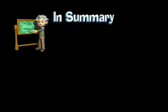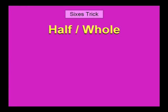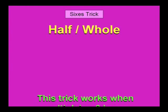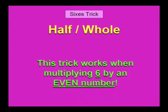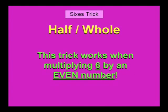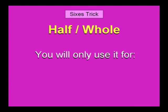Here's a quick review from the last lesson, Lesson 5: Sixes. The strategy for the sixes is the half-whole trick. This trick works when multiplying six by an even number. You will only use it for these facts.